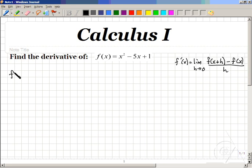That means that f prime of x will equal the limit as h goes to 0. f of x plus h means that we're going to take every x plus h and plug that in wherever we see an x.